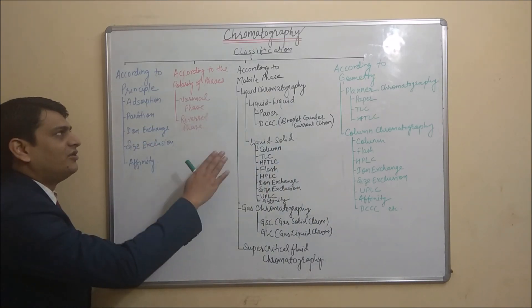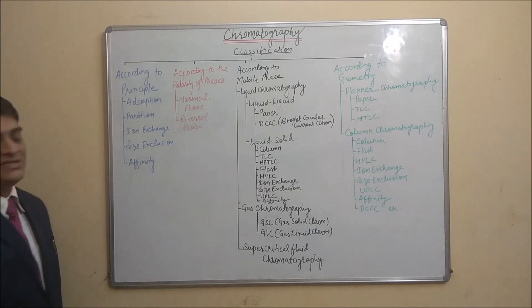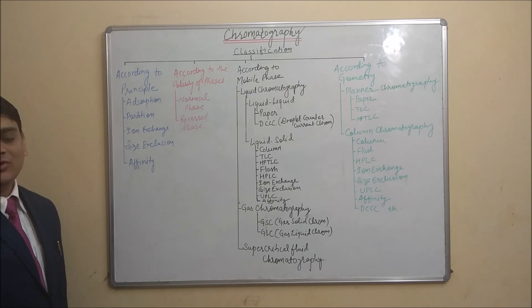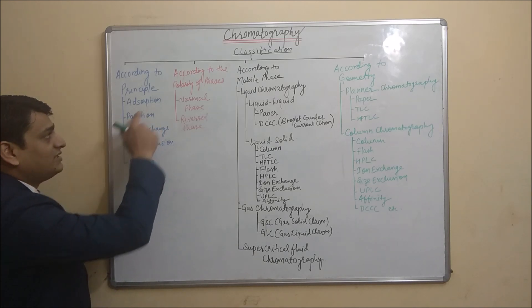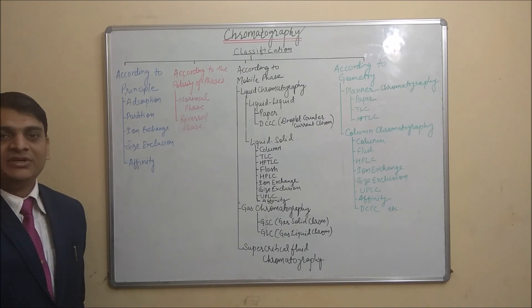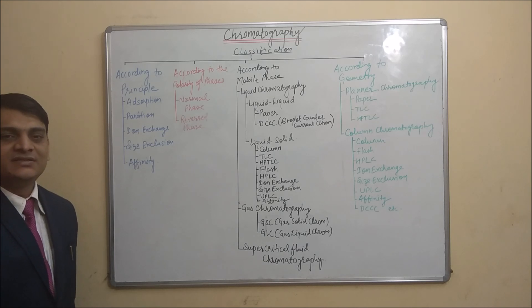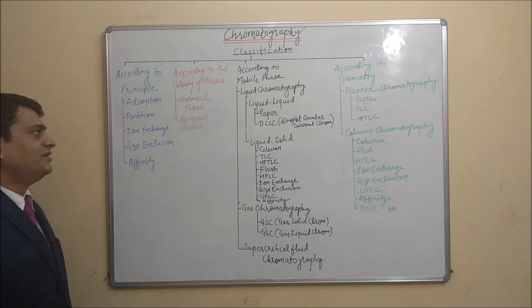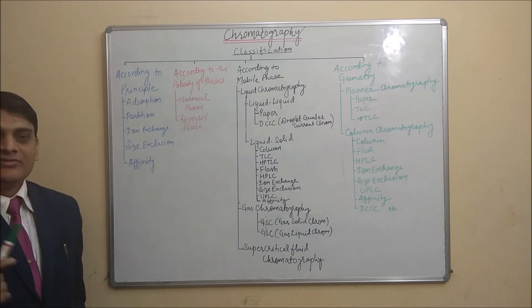This is the overview of classification of chromatographic techniques. Now, according to the principle, the first one is adsorption chromatography. It is based on adsorption phenomena where the stationary phase is solid and the mobile phase is either gas or liquid. The second one is partition chromatography, where the stationary phase will always be liquid and the mobile phase will be liquid or gas.